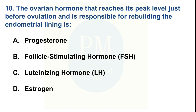The ovarian hormone that reaches its peak level just before ovulation and is responsible for rebuilding the endometrial lining is — Option A: progesterone. Option B: follicle-stimulating hormone (FSH). Option C: luteinizing hormone (LH). Option D: estrogen. The correct option is Option D — estrogen.